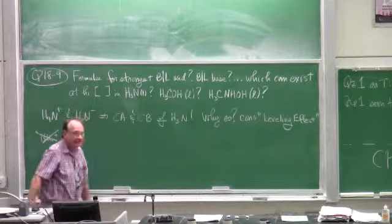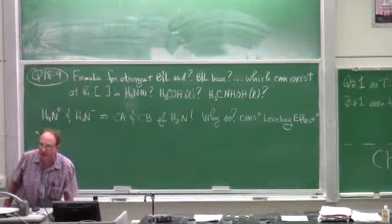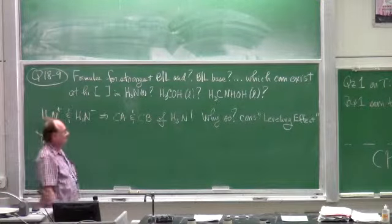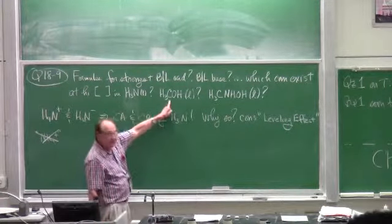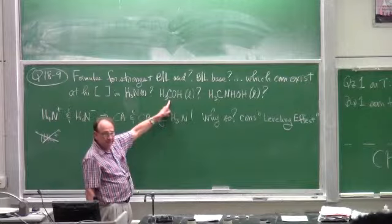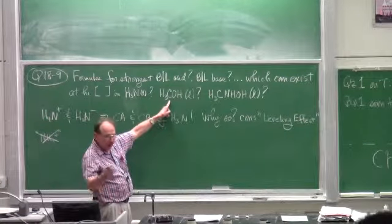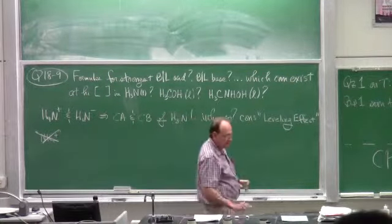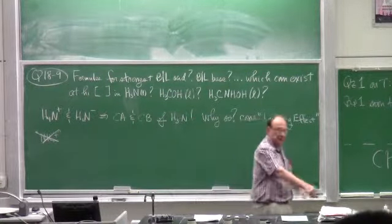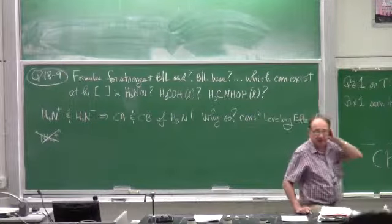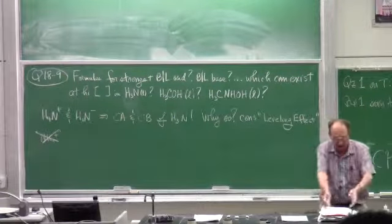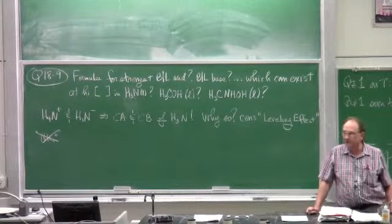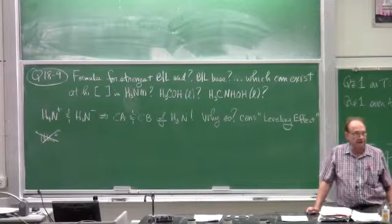They wrote H₂SO₄ — the stupid formula for sulfuric acid — because H₂SO₄ implies that the molecule has hydrogen-sulfur bonds, which it does not. They didn't tell that to the students; they just wrote H₂SO₄ on the board and asked the students to write a Lewis structure. Guess what they got? All wrong Lewis structures. The most important property of a species is its structure, so if you write a formula that belies structure, you are not doing a service to the educational process.